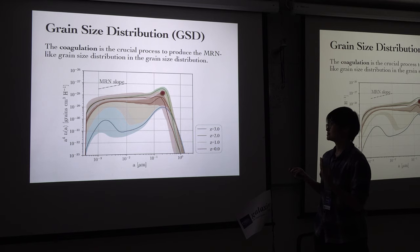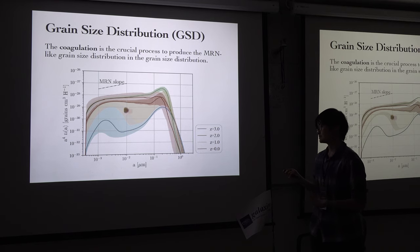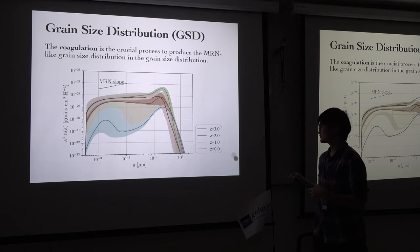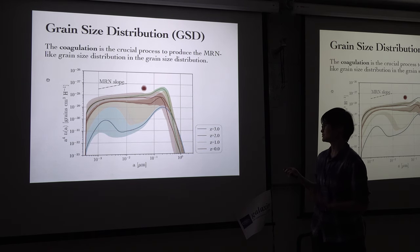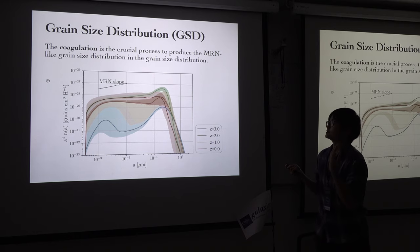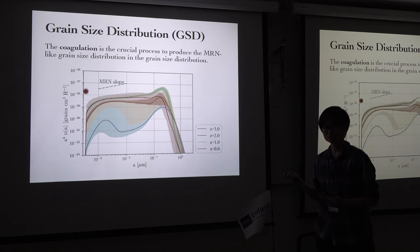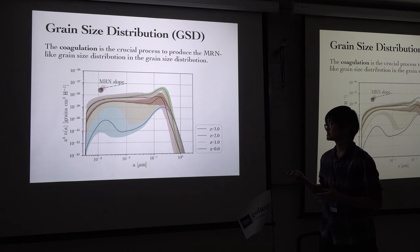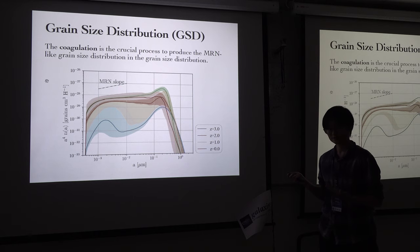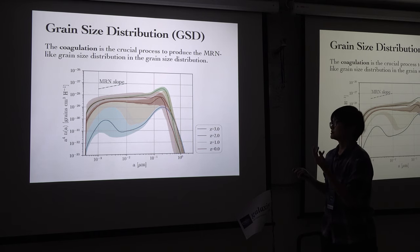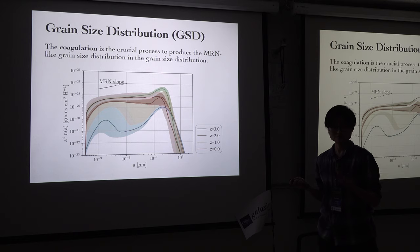The total dust abundance reaches its peak around redshift 1, and then decreases slightly at redshift 0. I also plot the MRN slope here, which people believe represents the grain size distribution of Milky Way-like galaxies. This slope is roughly consistent with our calculation at redshift 0, indicating that we can reproduce a Milky Way-like grain size distribution. To produce this kind of form, we need sufficient coagulation, which is a crucial process to reproduce this slope.